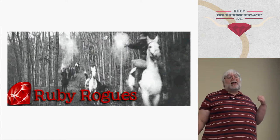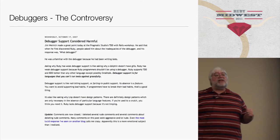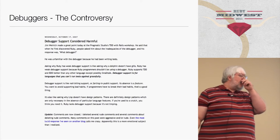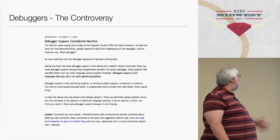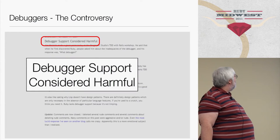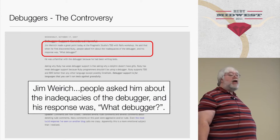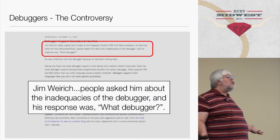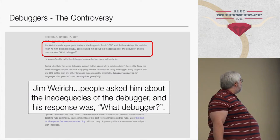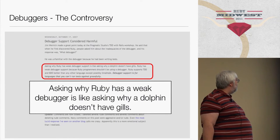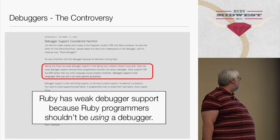To be fair, these guys didn't start this - I started it. Back in October of 2007, I was teaching a class on test-driven development, and in that class was Giles Boquette. He wrote an article after the first day of class and said, debugger support is considered harmful. Jim Warren - people asked him about the inadequacies of the debugger, and his response was, what, debugger? Because at the time I had never even used the Ruby debugger. So when they asked me about the debugger, I said I never use it. Giles wrote up this article and said things like, asking why Ruby has a weak debugger is like asking why a dolphin doesn't have gills. Ruby has weak debugger support because Ruby programmers shouldn't be using a debugger.